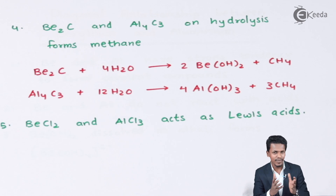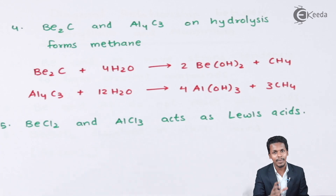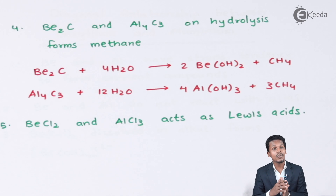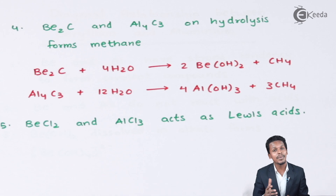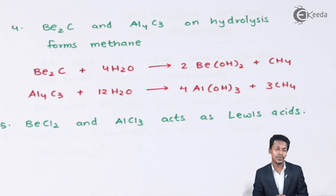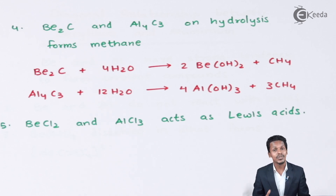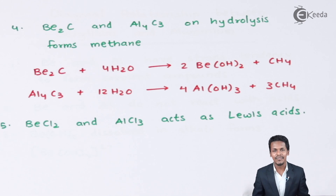The sixth point: beryllium hydroxide and aluminium hydroxide are both amphoteric in nature, not basic. Aluminium hydroxide Al(OH)₃ is amphoteric, just like beryllium hydroxide. In contrast, the hydroxides of other group 2 elements (excluding beryllium) are basic in nature. This is another important similarity between beryllium and aluminium that distinguishes them from the rest of their groups.